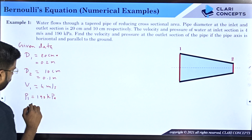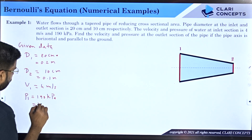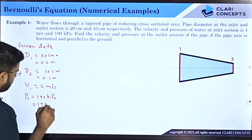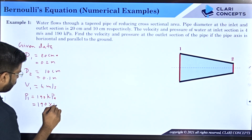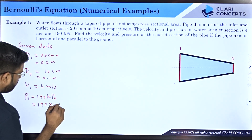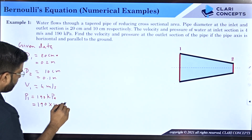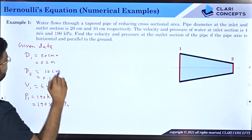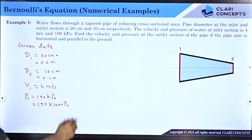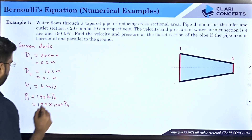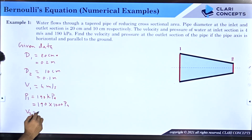Since kilo is given, convert to Pascals by multiplying by 1000. We need to find V2 and P2.